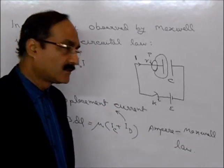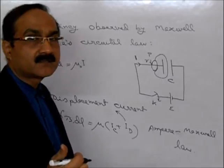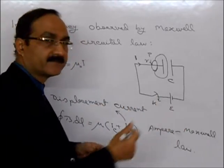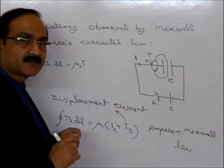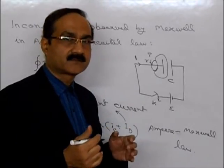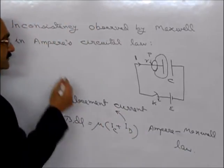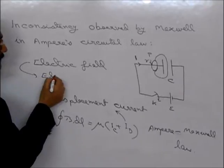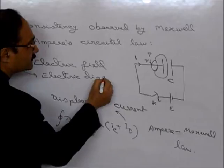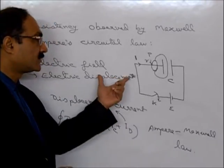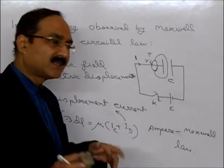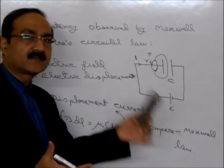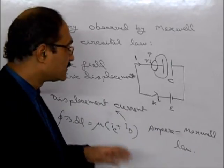This is called displacement current. By the word displacement, we usually understand movement of an object — but here, no object is moving. In early days, the electric field was also called electric displacement. Maxwell borrowed from that to name it displacement current. Don't worry about the word displacement from mechanics — just remember this is called displacement current.